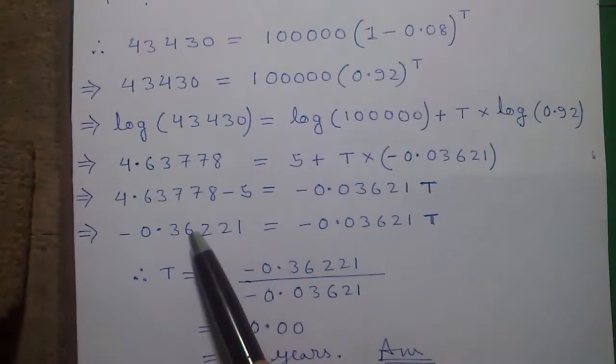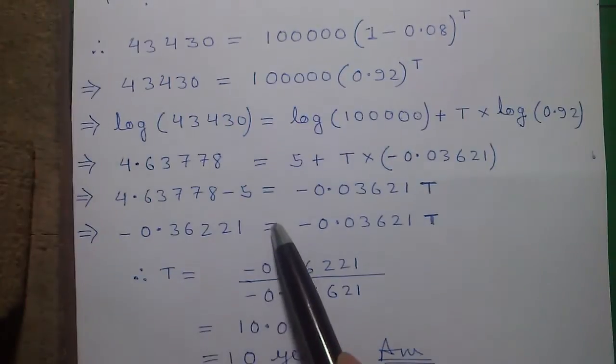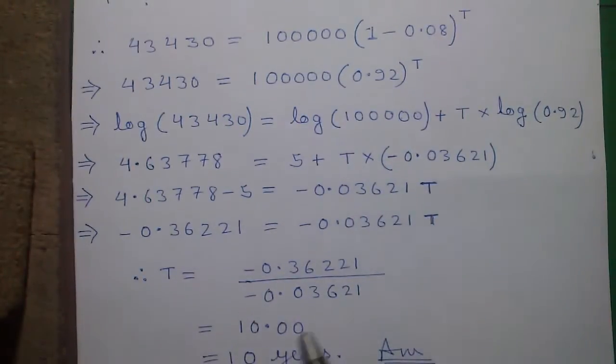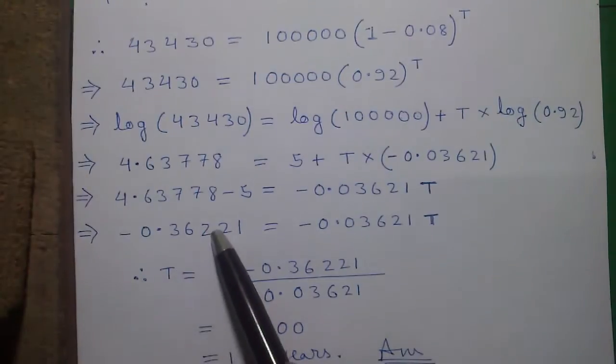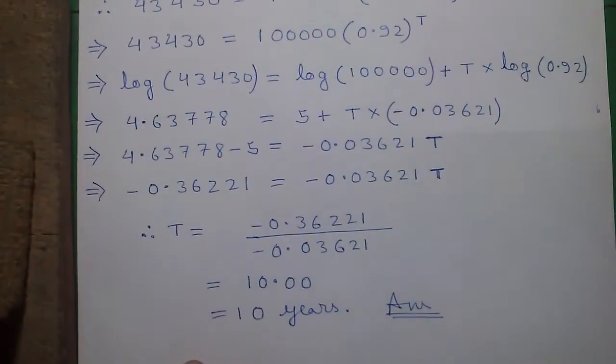This minus this equals to minus 0.36221 equals to minus 0.03621 T. So T equals to this divided by this equals to 10.00 or 10 years. This is our answer. So the effective life of the machine is 10 years.